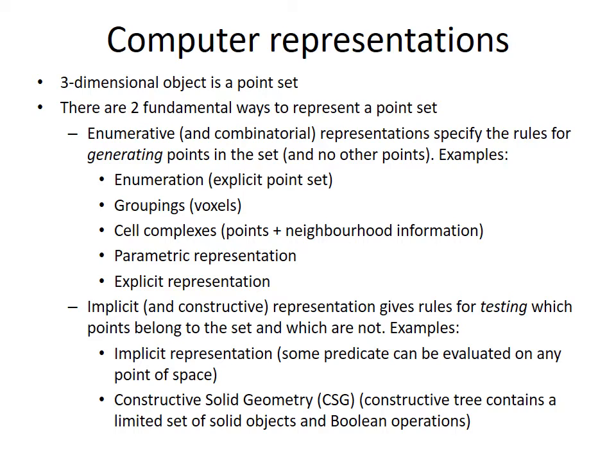For example, we can define a unit square as all points with x and y coordinates belonging to the interval from minus 1 to 1. For any point, it can be tested if each coordinate is in the interval. Such rule is an example of implicit representation.